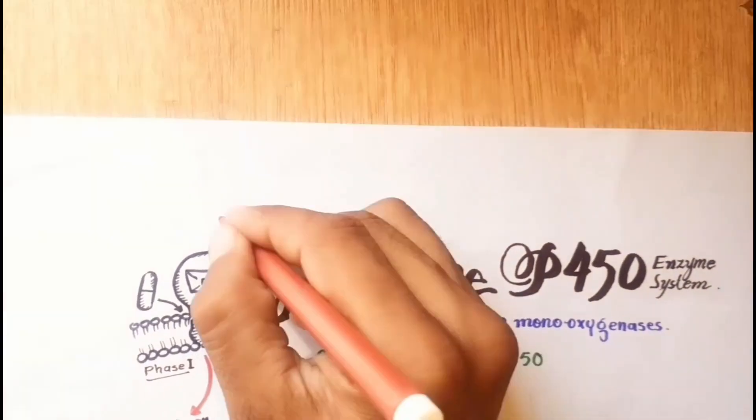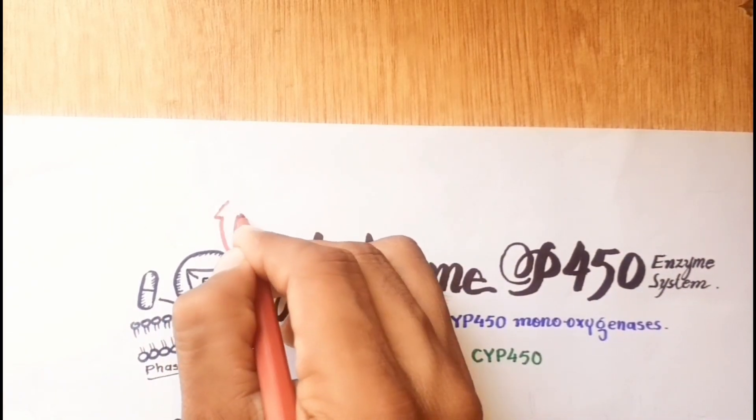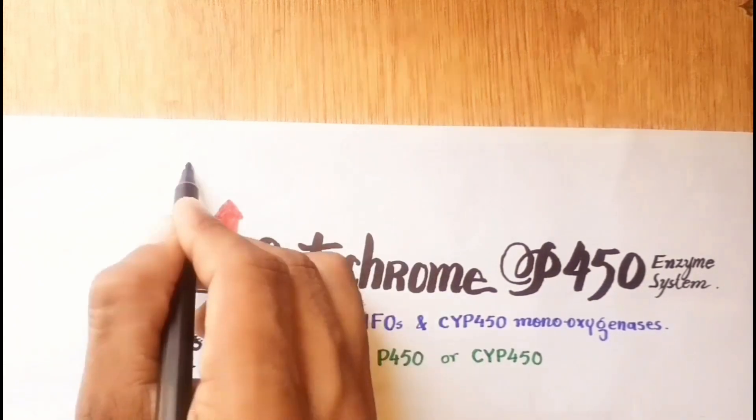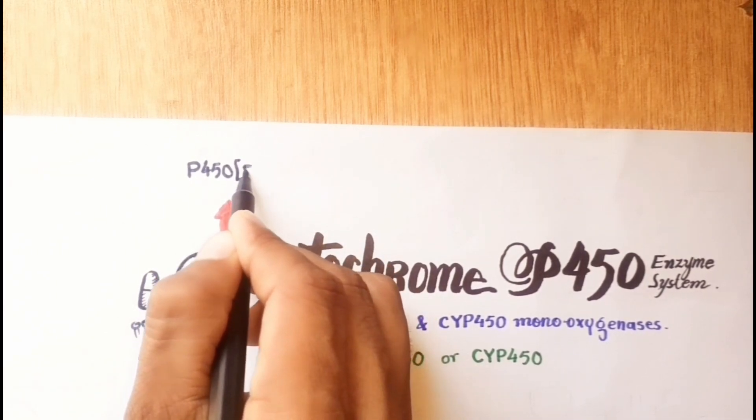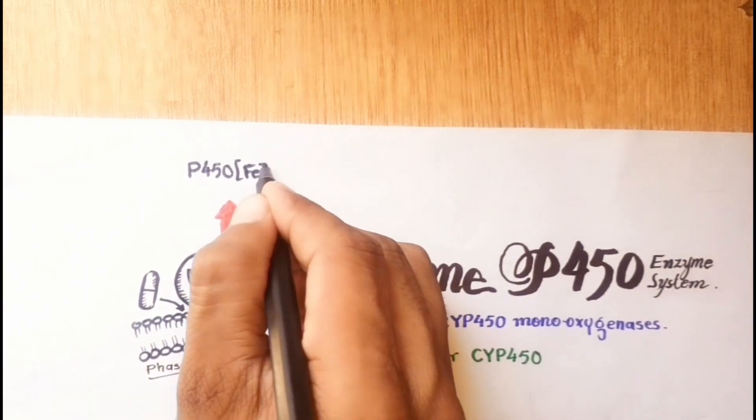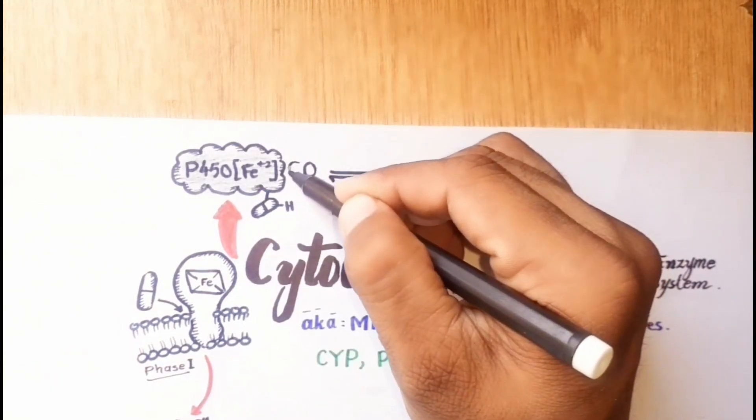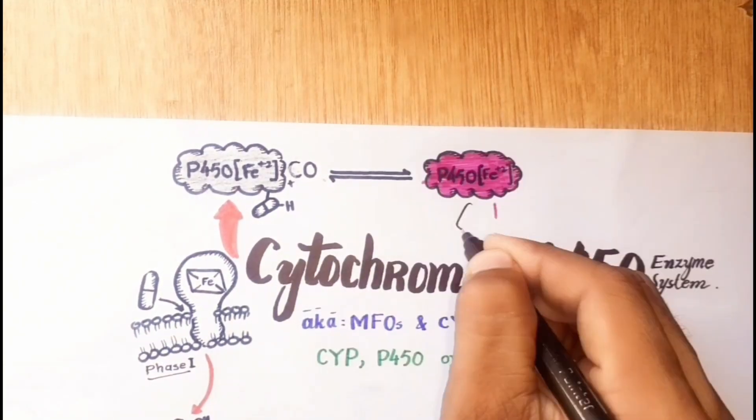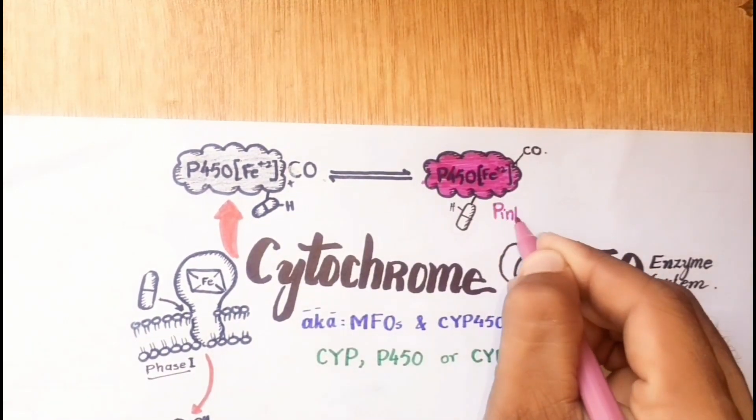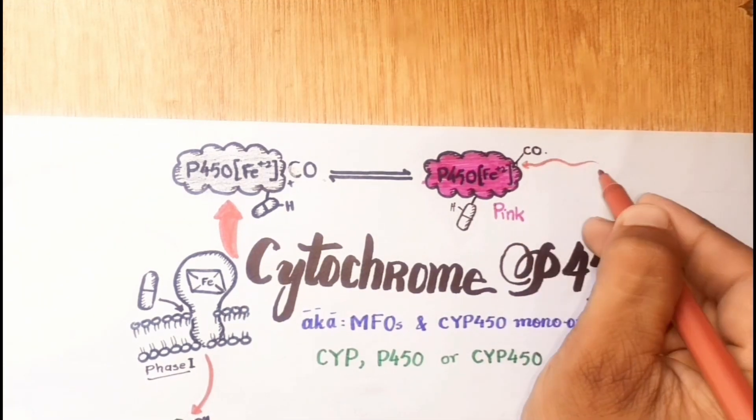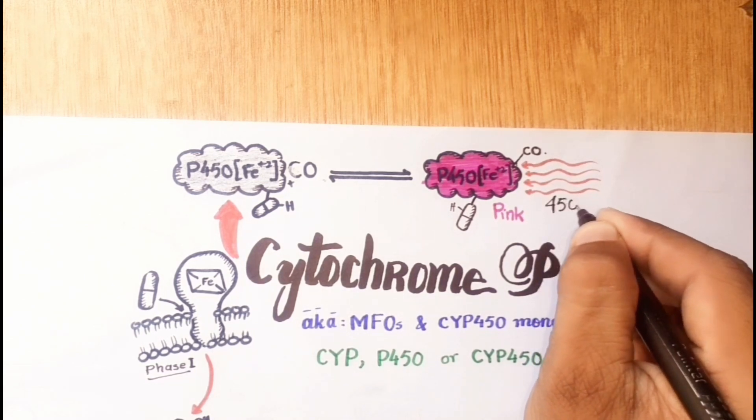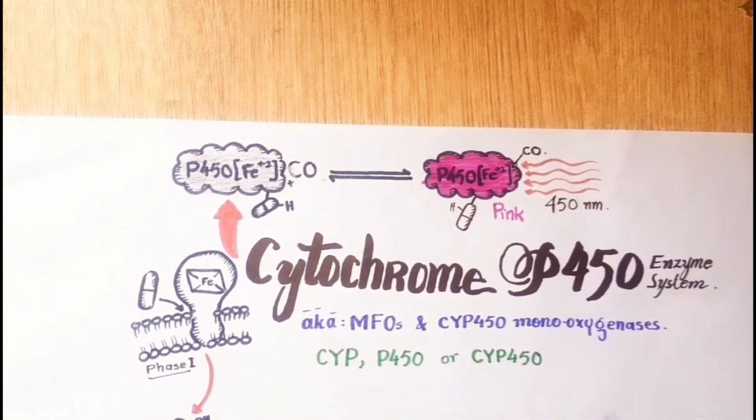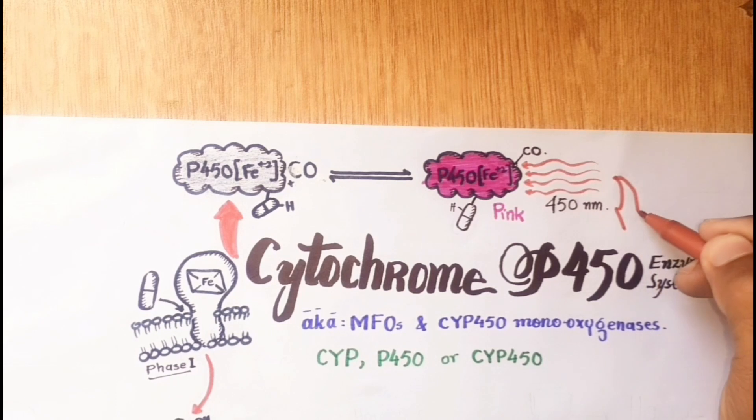The name cytochrome P450 is derived from the spectral properties of this heme protein. In its reduced ferrous form, it binds with carbon monoxide to form a pink compound which shows maximum absorption at 450 nanometers. That's why they are named as P450.